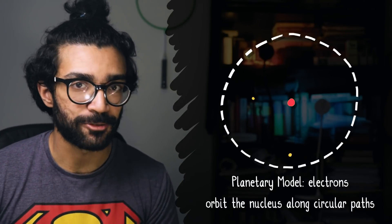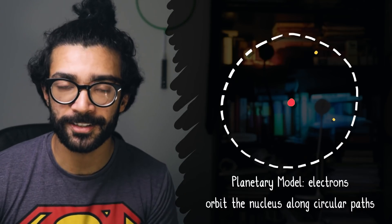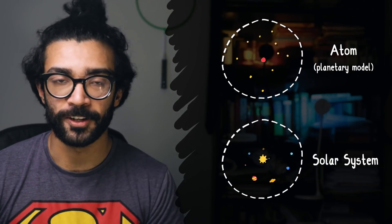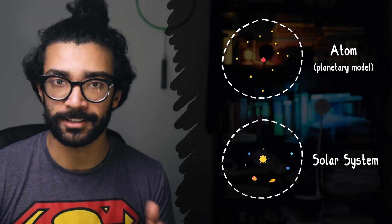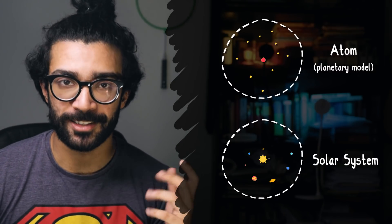And this led Rutherford to think up a planetary model for the structure of the atom. In this model, the small but dense region of positive charge, the nucleus, behaves like the sun at the centre of our solar system, and the electrons orbit the nucleus like planets around the sun. This is why it's known as the planetary model.